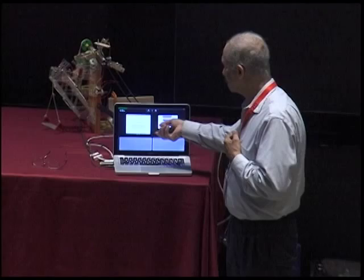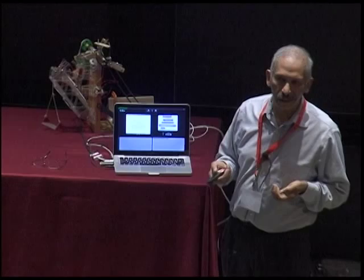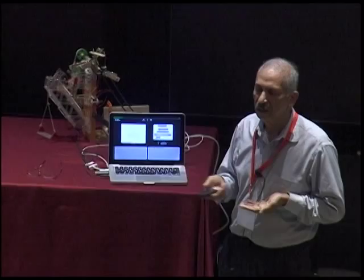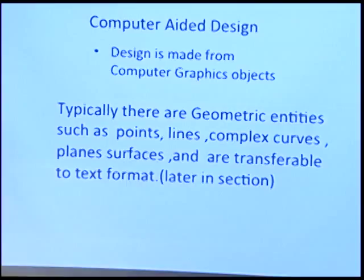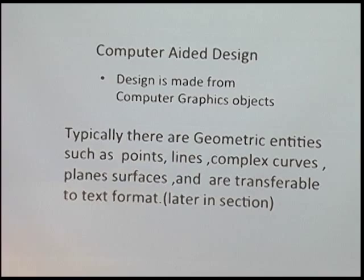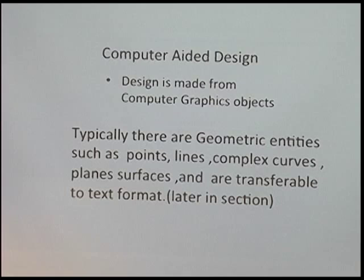Computer-aided design is made from computer graphics objects. These are the mathematical definitions of various entities like lines, points, complex curves, surfaces, and planes. All these put together are the tools with which they build the objects. So this is what computer-aided design is.